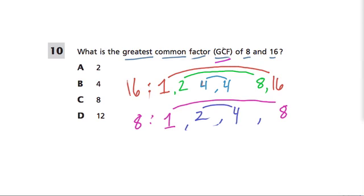But here, by listing out the factors, I like this method because it's just so intuitive. The greatest common factor means the greatest factor that these two numbers have in common. So you can just look.